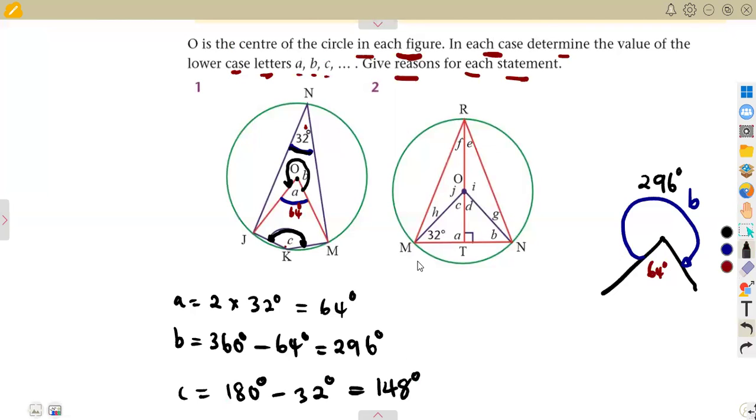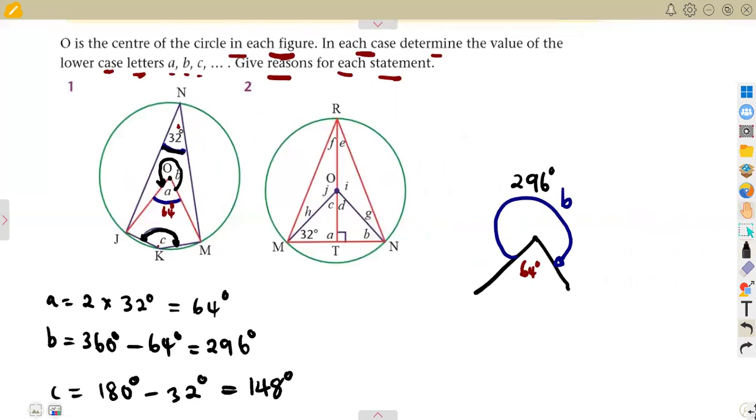Or you can use the concept that I was saying that angle C is the angle at the circumference, whereas angle B is the angle at the center. So it follows that angle C can be determined as the angle at the center divided by 2. The angle at the center, which is angle B, that is 296 degrees. Then we divide this by 2. So that is 296 divided by 2. We are going to have the same answer of 148 degrees. So angle C is at the circumference, B at the center. That is the case of our question.